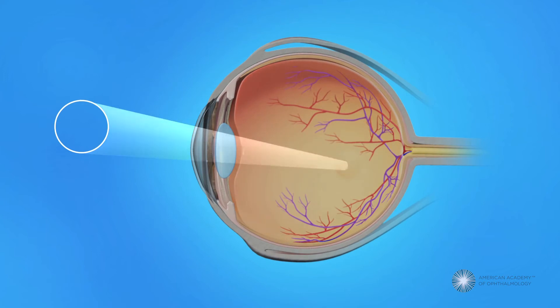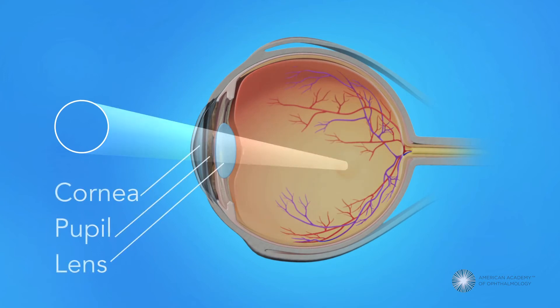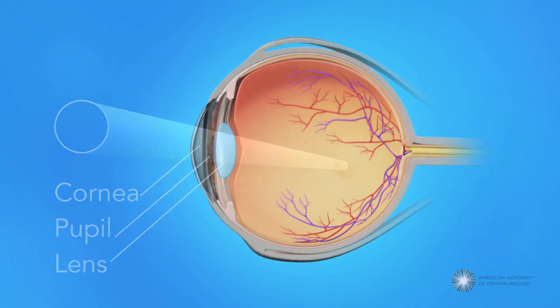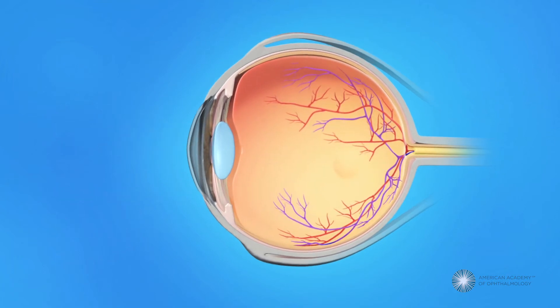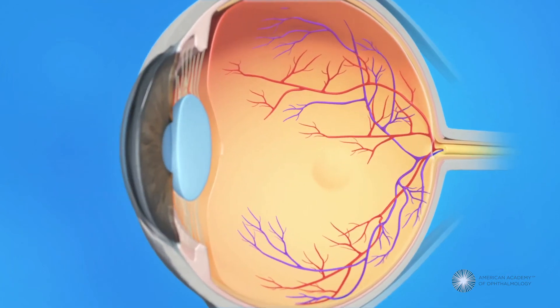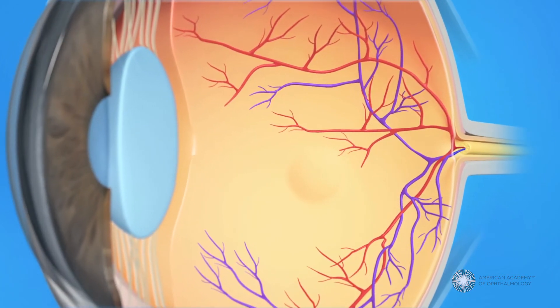Light rays enter the eye through the cornea, pupil, and lens. These light rays are focused on the retina, the light-sensitive tissue lining the back of the eye.